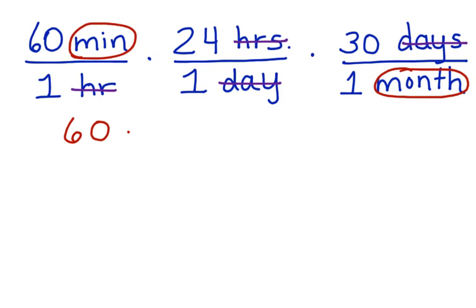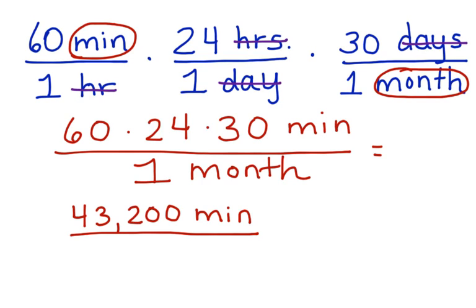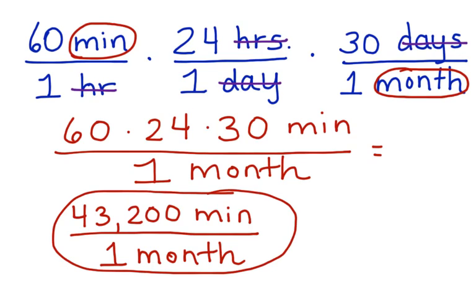So we have 60 times 24 times 30 minutes left in the numerator, and we have one month left in the denominator. When we multiply the terms in the numerator together, we get 43,200 minutes are in one month. And in this case, that month is the month of September. This is our final answer, and our work is complete.